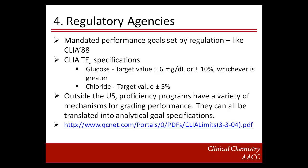The next in the hierarchy is quality specifications based on regulatory agencies. CLIA 88 specifications have a set of mandated performance goals. CLIA specifies the total allowable error for glucose as target value plus or minus 6 mg/dL, or target value plus or minus 10%, whichever is greater. For chloride, CLIA specifies target value plus or minus 5%. CLIA TEa limits tend to be wider than other TEa limits and are currently undergoing review, so they should always be the minimum.